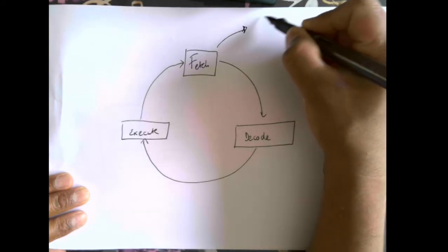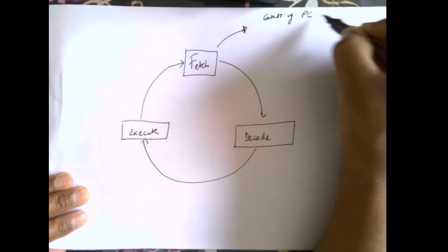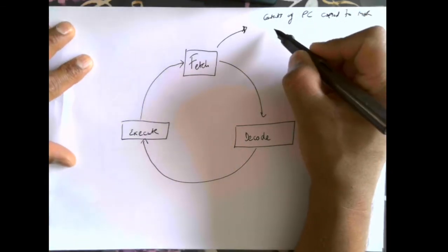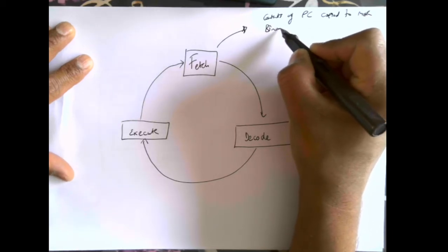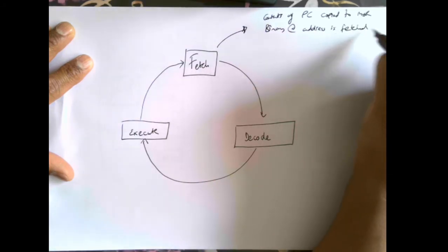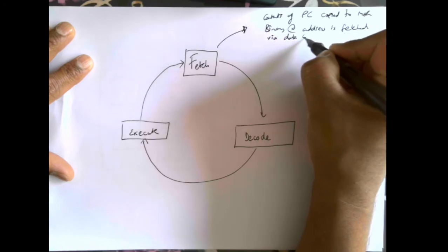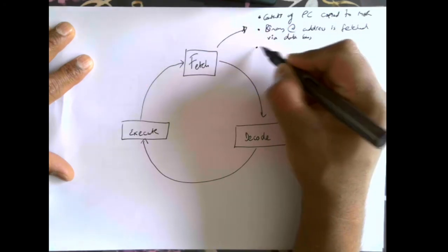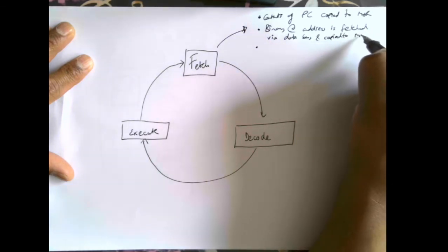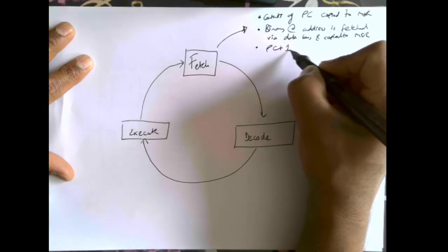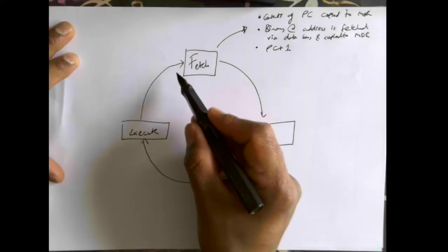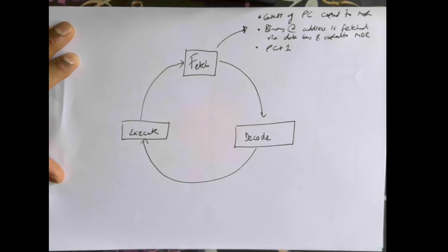So basically what we're saying is: in the fetch stage, the contents of the PC are copied to the MAR; the binary at that address is fetched by the data bus and copied into the MDR; as soon as it's copied to the MDR, the program counter goes up by one — PC plus one. Then the instruction is decoded, the instruction is executed, and then we fetch the next instruction.